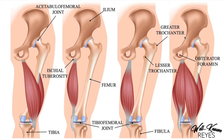Now on the femur, we have the greater trochanter. This is really easy to palpate — all you have to do is touch the side of your hip and rub around; you should be able to feel that greater trochanter. Here we have the lesser trochanter. This is the ischium. On the ischium, we have this round hole known as the obturator foramen, where nerves and blood vessels pass through. Now on the ischium, we have the ischial tuberosity, which is going to be an attachment site for many of the hamstrings.